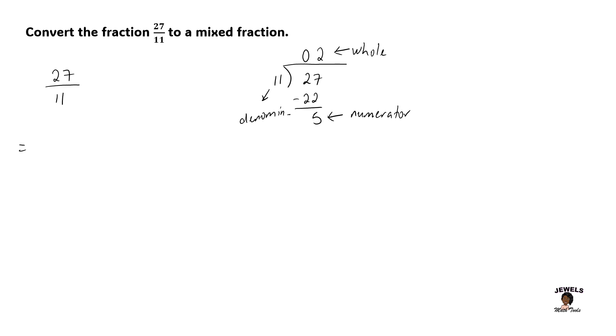So when we set back up our fraction, 2 is my whole number, 5 is my numerator, and 11 is my denominator. And this will give us the fraction of 2 and 5 elevenths.